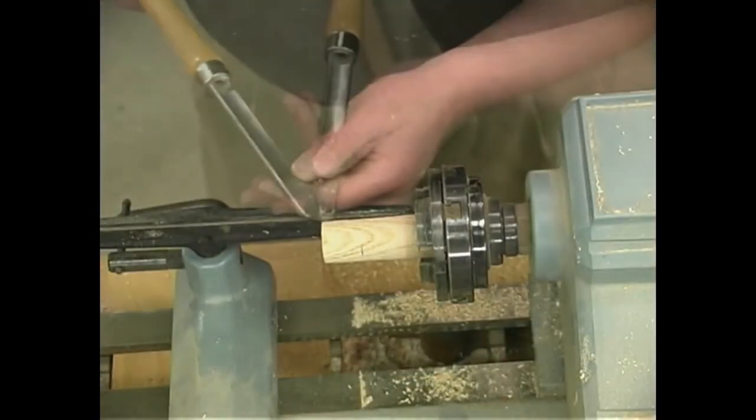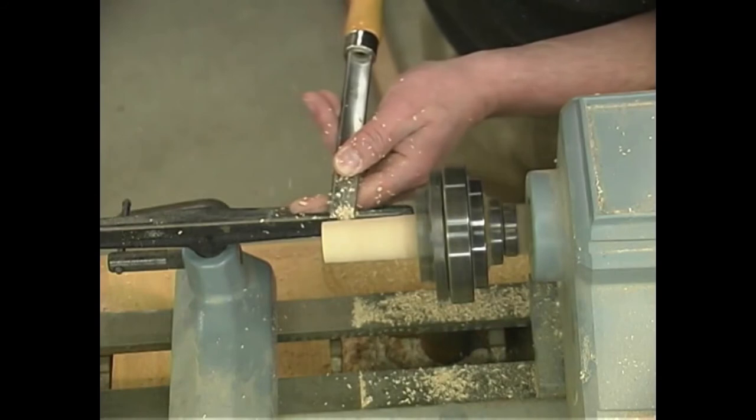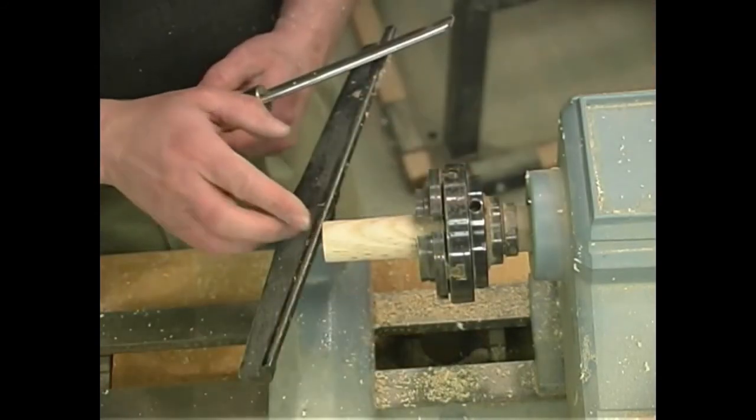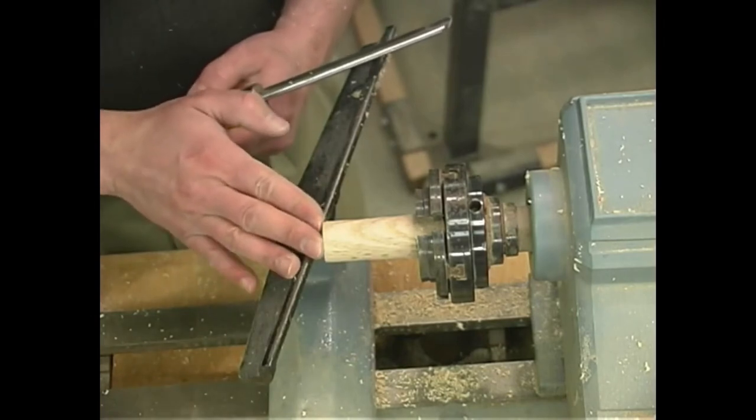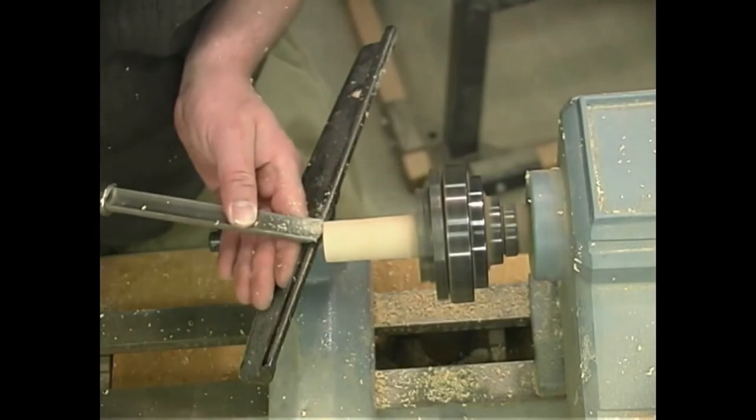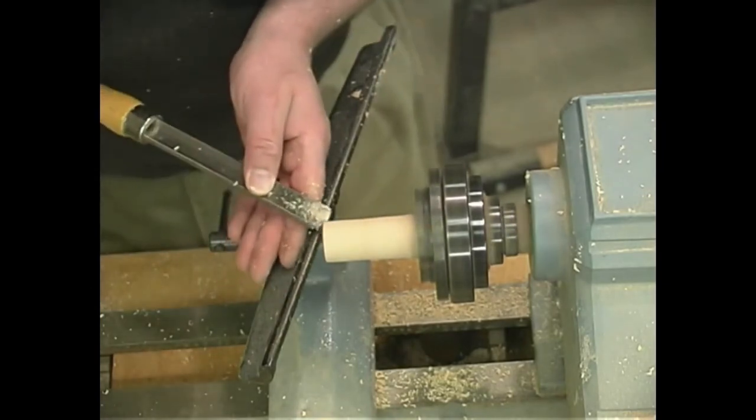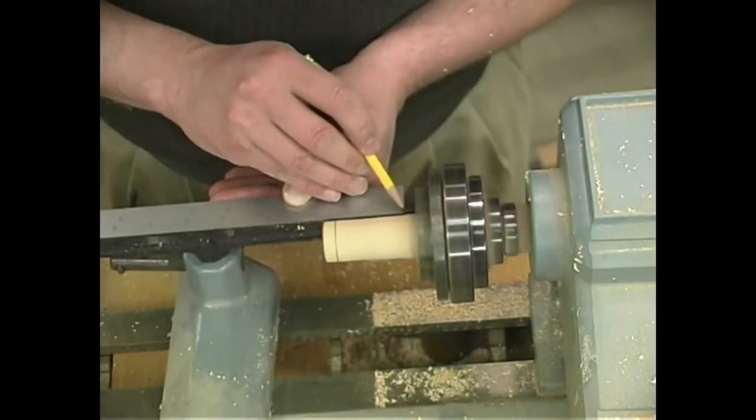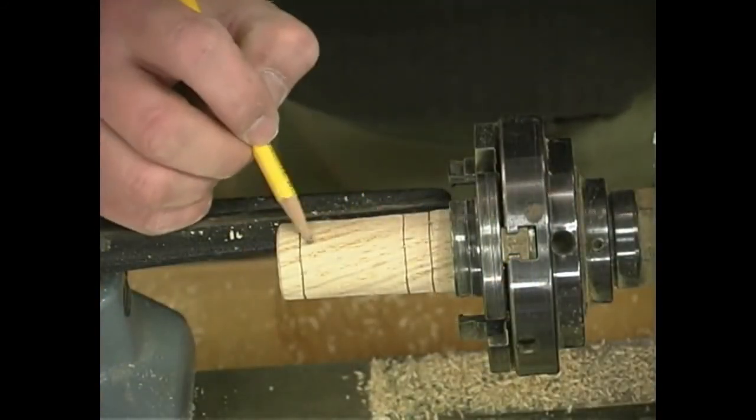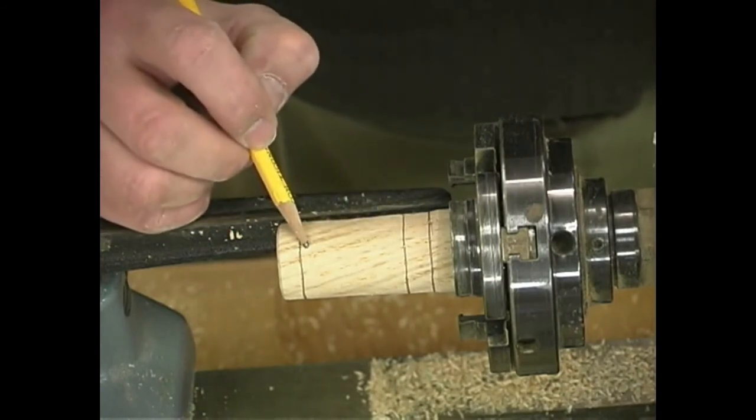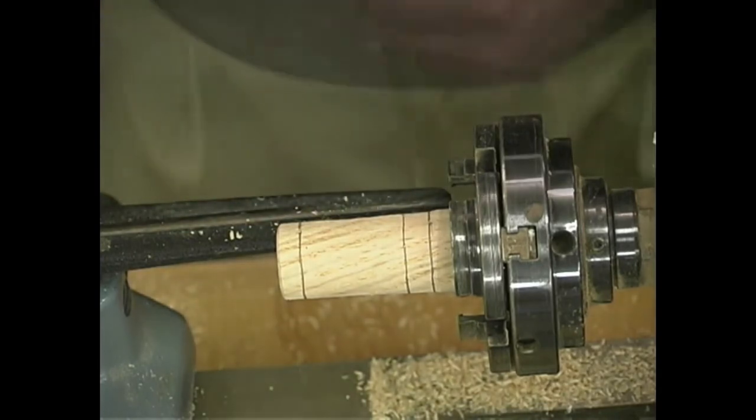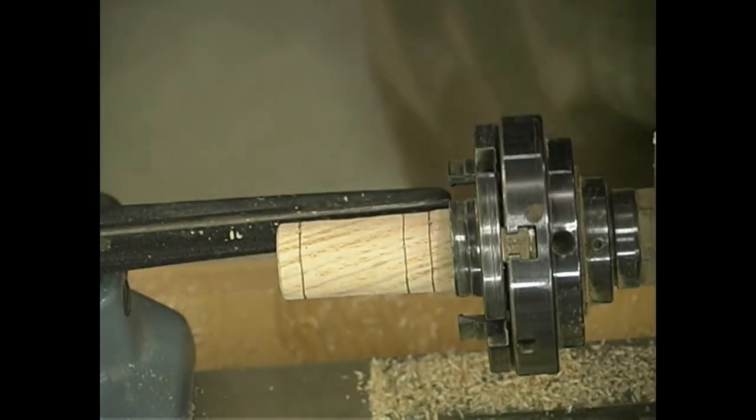Using a gouge, I'll start out by first truing up the surfaces. This end will serve as the area where we push up on it to lift the glass, so I'll shape it nicely to fit the hand - slightly mushroom shape. I've laid out the locations where the deep recesses that we need to cut away, and then the opposite end or the top end of the handle. Using a parting tool, now I can cut that deep relief area.